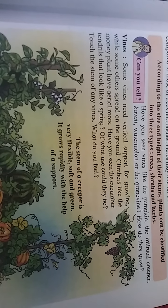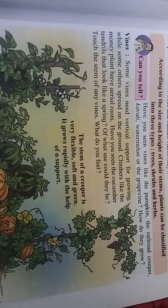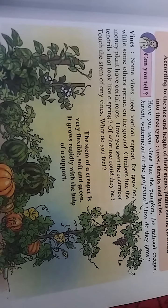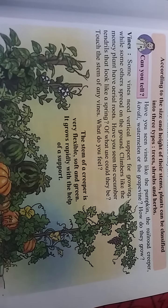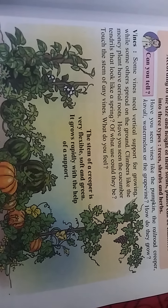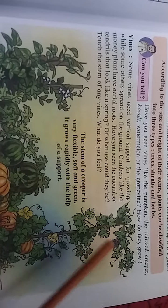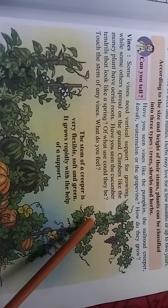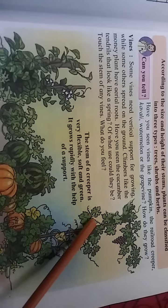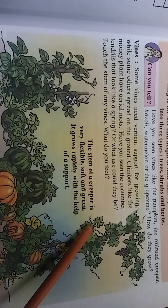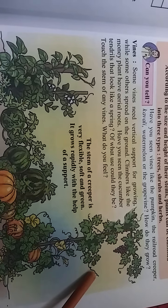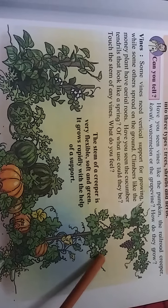Climbers like the money plant have aerial roots. Have you seen the cucumber tendrils that look like a spring? This spring-like structure is called aerial roots, and their use is to support the vines.